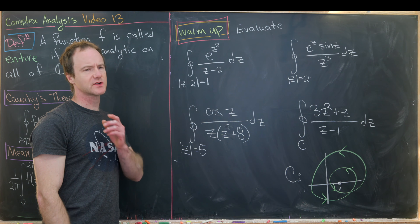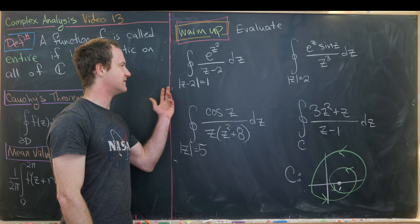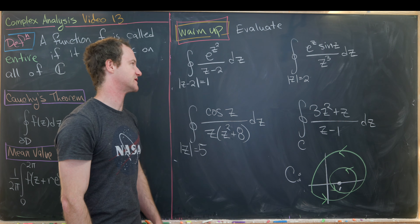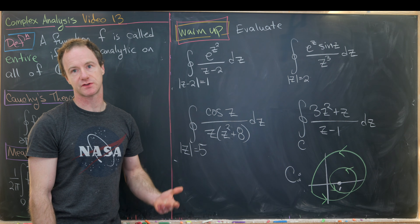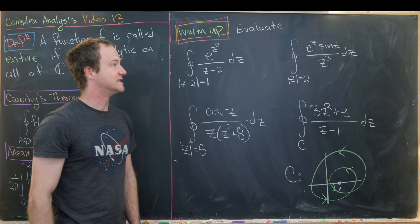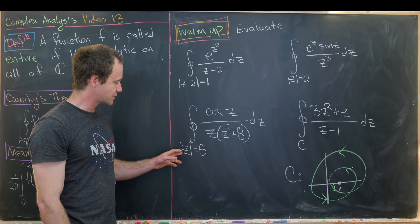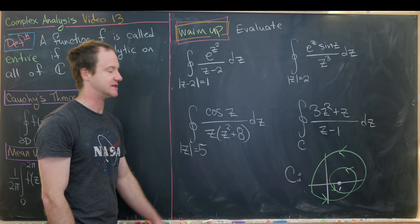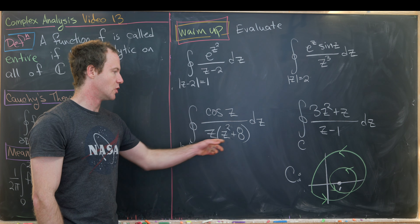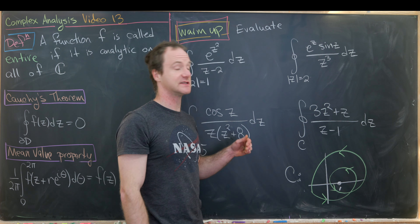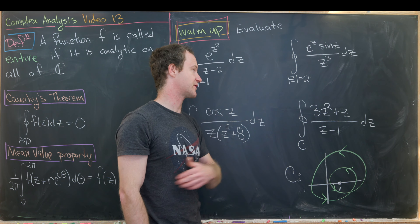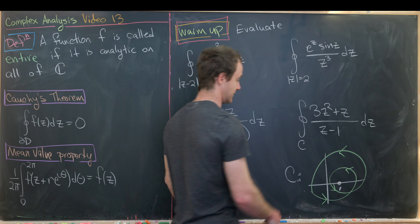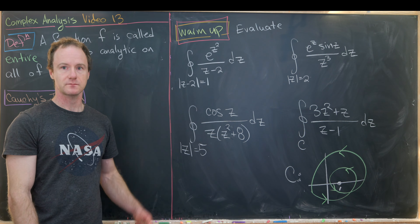I'll leave you with four warmup problems based on the Cauchy Integral Formula. Evaluate: (1) the integral over |z − 2| = 1 of e^{z²}/(z − 2) dz; (2) the integral over |z| = 2 of e^z sin(z)/z³ dz; (3) the integral over |z| = 5 of cos(z)/(z(z² + 8)) dz; and (4) the integral over a closed curve C of (3z² + z)/(z − 1) dz, where the curve loops back on itself with the point z = 1 inside.